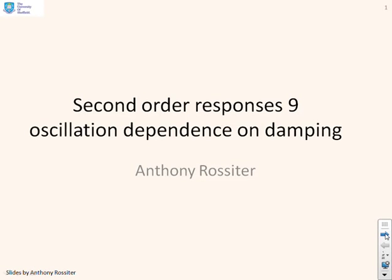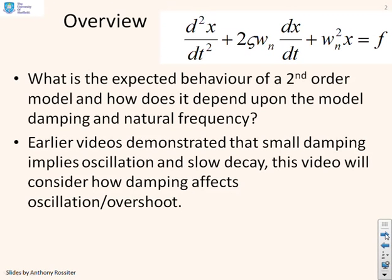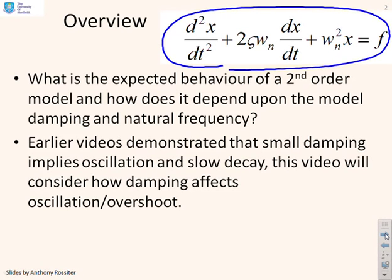The ninth video on second-order responses looks at oscillation and overshoot. We're looking at second-order models of the form: d²x/dt² + 2ζωn dx/dt + ωn²x = f. We're asking how the behaviour of this system depends upon parameters such as the damping ζ and the natural frequency ωn. Earlier videos showed that small damping implies oscillation and slow decay, and this video looks at that in more detail — specifically the oscillation and the overshoot.